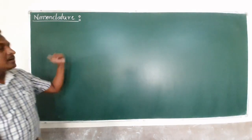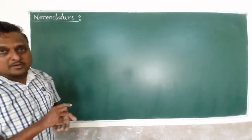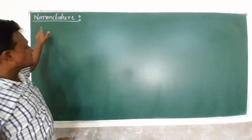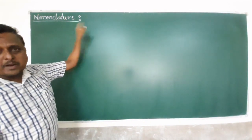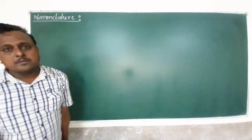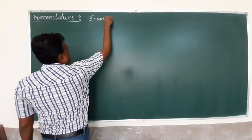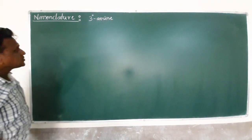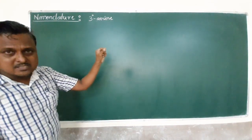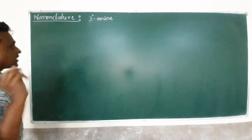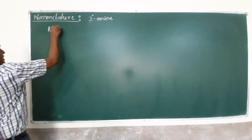Welcome everyone. In this video we will continue the part of nomenclature of amines. In the last video we already covered the nomenclature of primary amine and secondary amine. Today we have the tertiary amines as a very important example. The tertiary amine is mentioned in three general formulas.